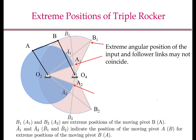We can use a similar procedure to compute the extreme positions of a triple-rocker mechanism. Let the mechanism be O2, A, B, O4, and B1 and B2 be the extreme positions of the moving pivot B. Let the ground link be L1, the input link be L2, coupler be L3, and the output link be L4. Again, when my output link is at position O4B1, my input link is at position O2A1-bar, and A1-bar is not the extreme position of the moving pivot A — the extreme position is A1. So the extreme angular positions of the input and output links may not coincide.